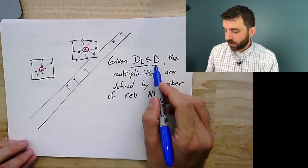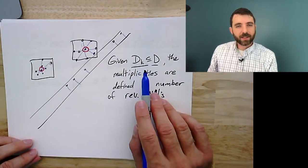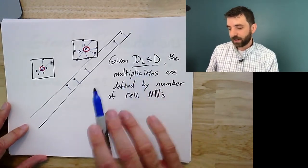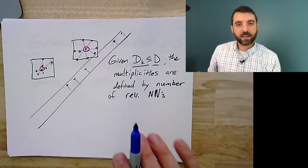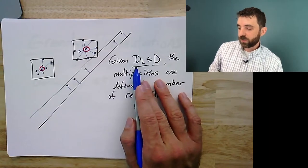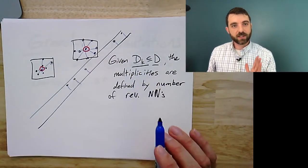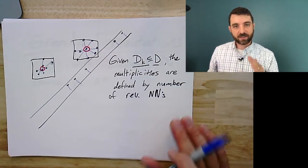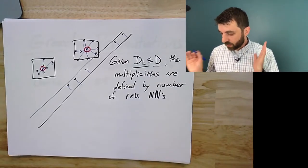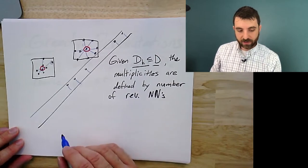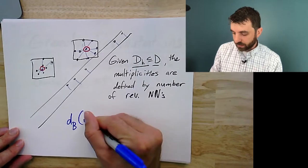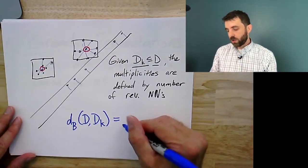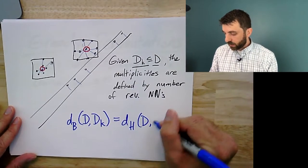Something cute happens: the bottleneck distance between the diagram and the sketch is actually equal to the Hausdorff distance between these sets. The Hausdorff distance doesn't require a matching — just a mapping. Every point in one set maps to another with distance less than the Hausdorff distance. Formally it's the supremum over all points of the minimum distance to the other set. Finding good Hausdorff approximations is a well-established problem, and clearly if I only need to pick a small number of points, I'm just doing clustering on the persistence diagram.